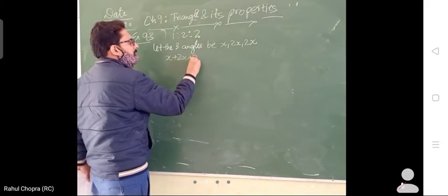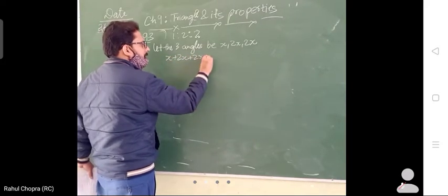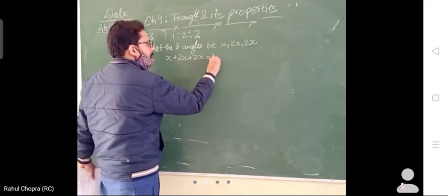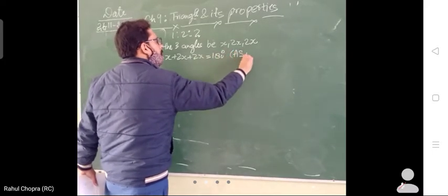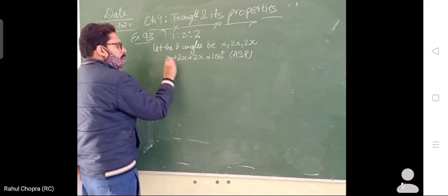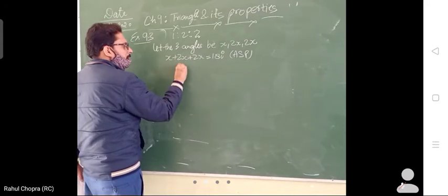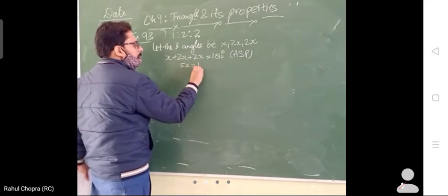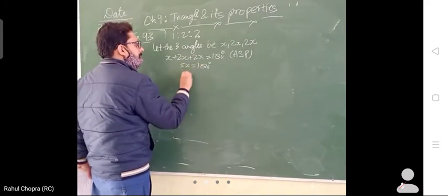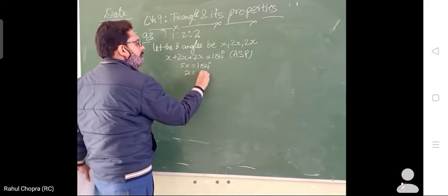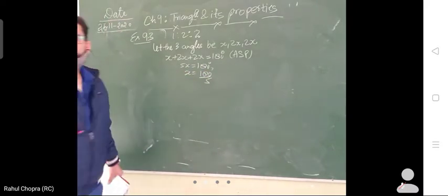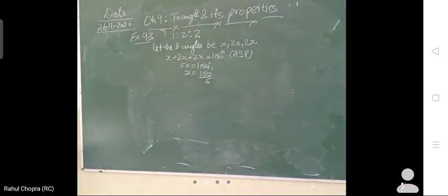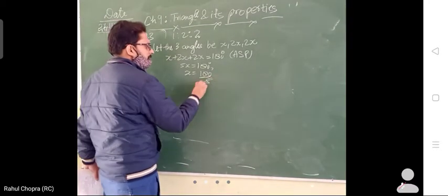You already know the sum of all interior angles of a triangle is 180 degrees. We will add the three angles and equate to 180 degrees because of the angle sum property. So X plus 2X plus 2X equals 5X, which equals 180 degrees. X is equal to 180 divided by 5, which is 36.